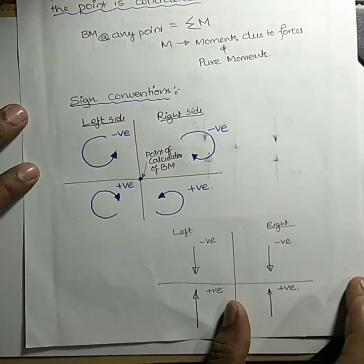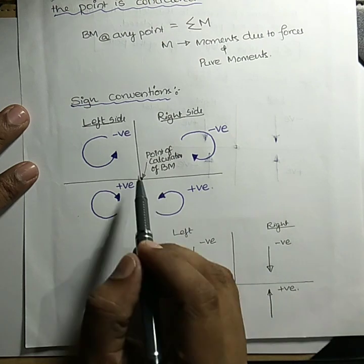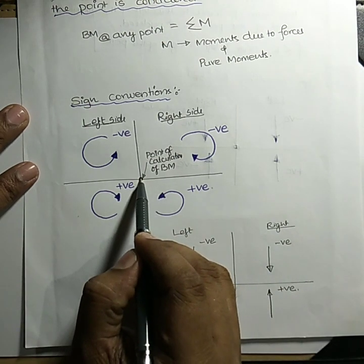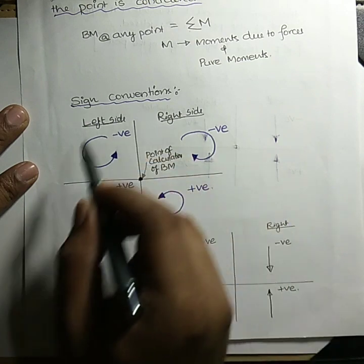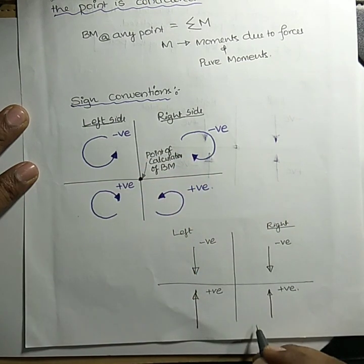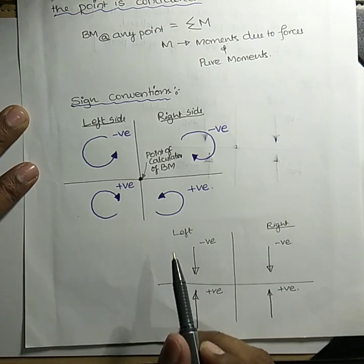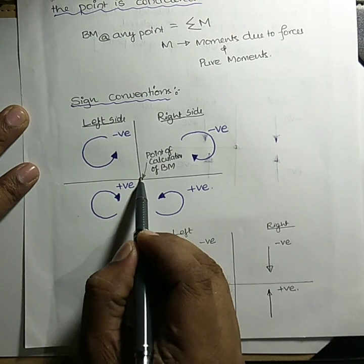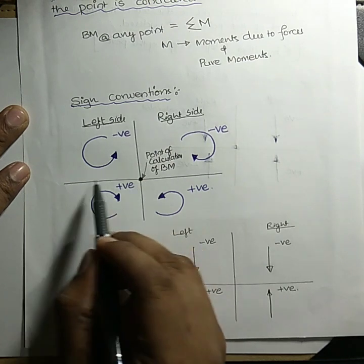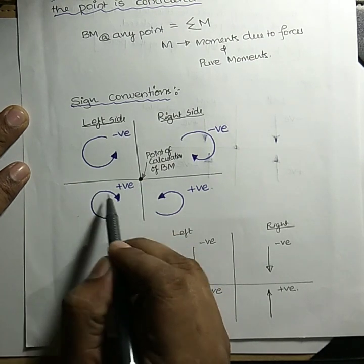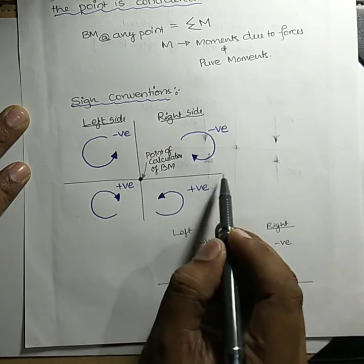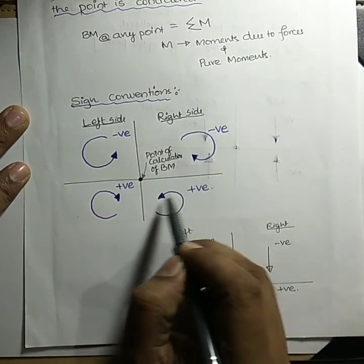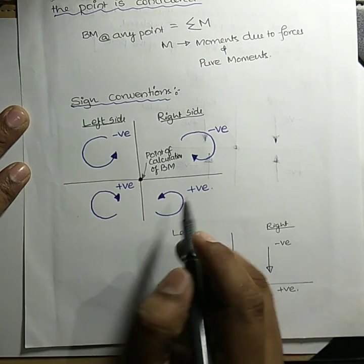For bending moment sign convention: if we have pure moments, we have one sign convention; if we have forces, we have a second. Calculating bending moment towards the left hand side — left side clockwise is positive, left side anticlockwise is negative. Right side clockwise is negative, right side anticlockwise is positive.